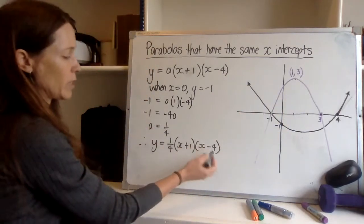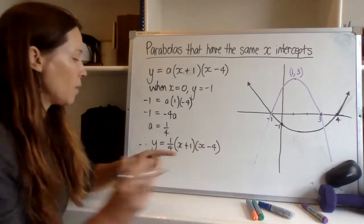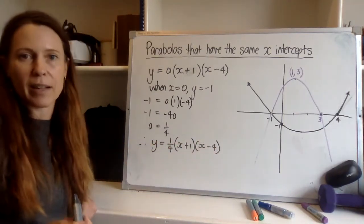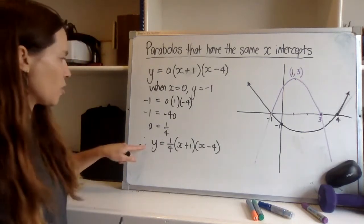If I wanted to I could expand this out too and get it in that other form ax squared plus bx plus c, but it's completely correct like that so unless you're asked to expand it out and get it into that form I would just stop there.